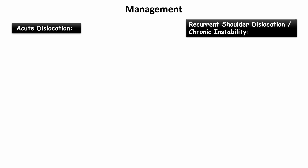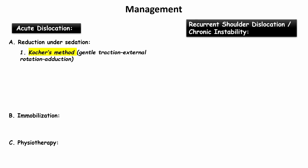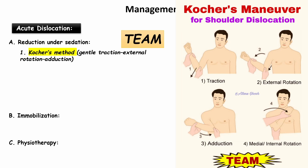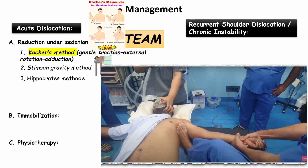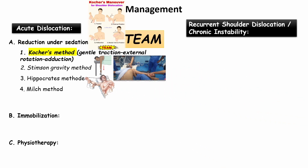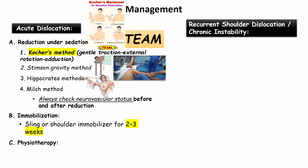For management of acute dislocation, there are three steps: reduction under sedation, immobilization, and physiotherapy. Reduction methods include Kocher's method (remembered as TEAM: Traction, External rotation, Adduction, and Medial/internal rotation), Stimson's gravity method, Hippocrates method, and Nils method. Always check neurovascular status before and after reduction. Immobilization uses a sling or shoulder immobilizer for two to three weeks.